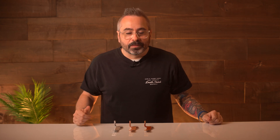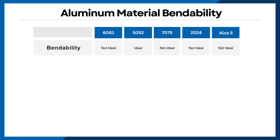6061 aluminum is challenging to bend and prone to cracking with small bend radii. Conversely, 5052 aluminum excels in bendability, but is less conductive than 6061. Additionally, aluminum 7075-T6, 2024-T3, and Alca5 are neither ideal for bending nor offer good conductivity — they are better suited for structural components due to their exceptional strength. So before selecting an aluminum type, carefully evaluate your project requirements to identify the best option for your needs.